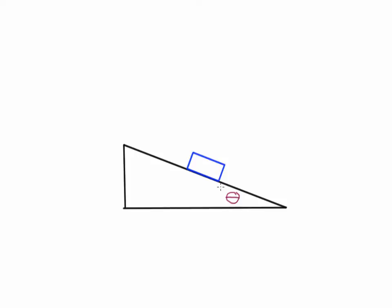We've already basically done that, so let's make it a little bit more complicated. Now we've added a person — this is Alice. Alice is not touching the box directly. She is pulling a rope which is connected to the box, and she's pulling the rope so that it is parallel with the ground, with a force of F sub A — the force that Alice is exerting on the rope.